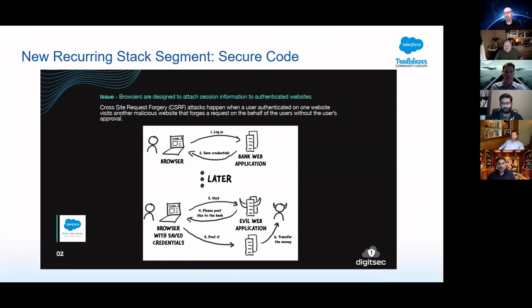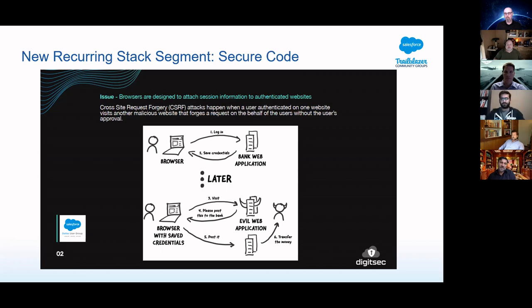The security flaw comes about because if the user, who is authenticated on a banking site, goes to another site, the browser loaded by that site can then send a request to the banking site. The browser will happily attach the session information to that request. And if the original banking site did not validate the fact that it was coming from another browser session, that request will get processed.